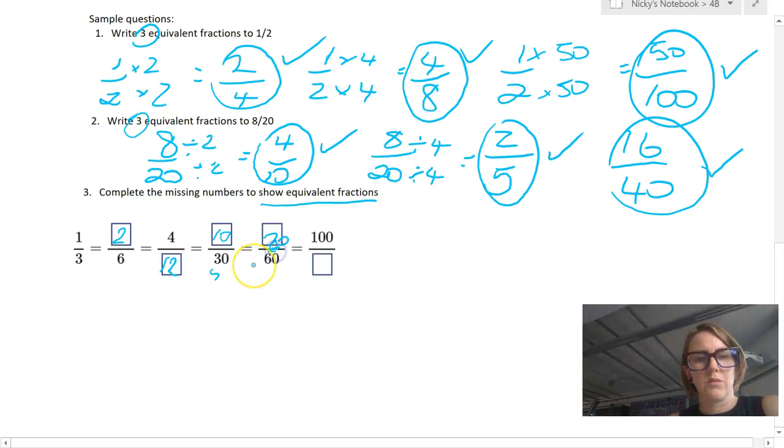And now at the end, I've got 100 as my numerator. So I've times 1 by 100 to get there. 3 by the same multiplication is 300. That's not going to fit in that tiny box. But there we go, 100 over 300. Okay. So I'll see you in the next one. Bye.